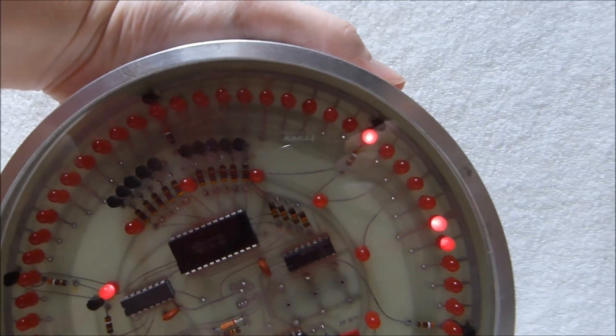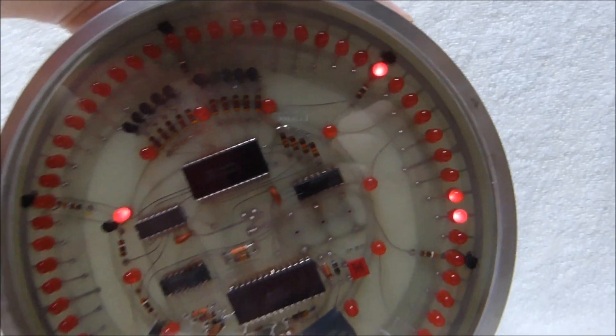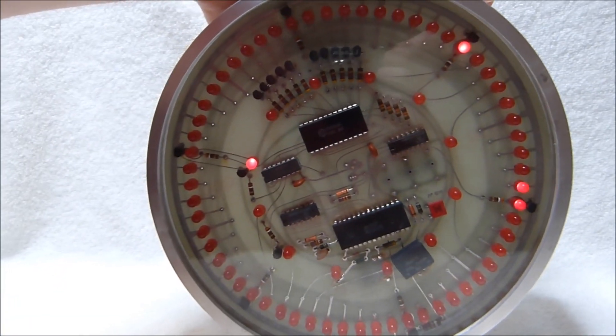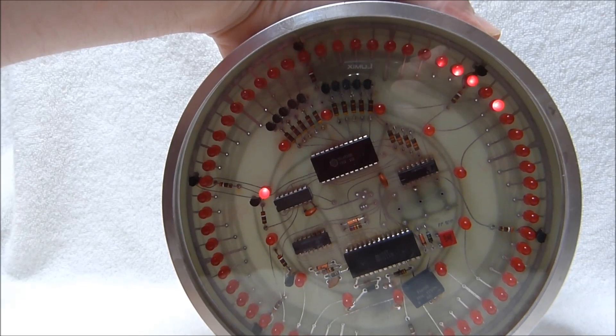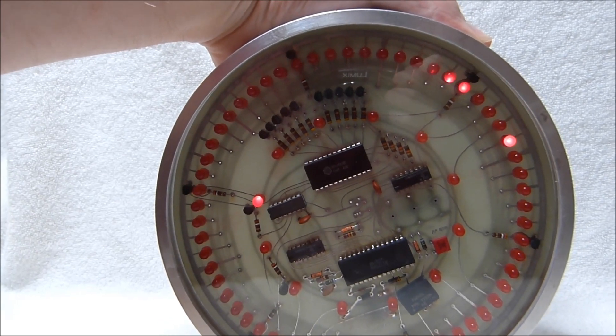The middle button is the slow set button which will rapidly advance the seconds. There it goes. You can see the minutes incrementing.